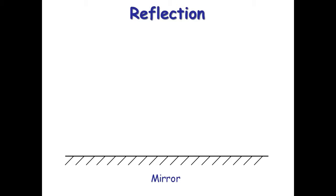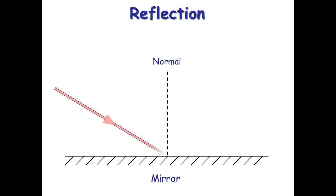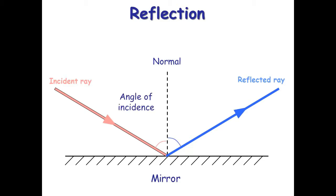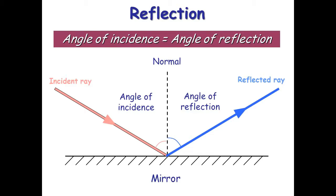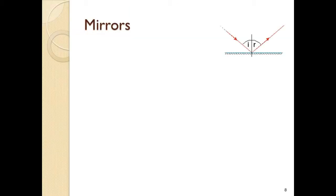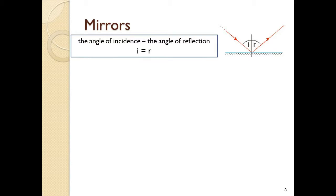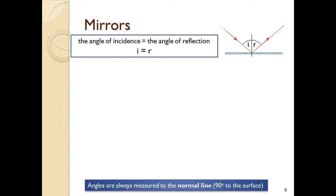A plane mirror — plane spelled P-L-A-N-E — means flat mirror. You always start by drawing a normal line, which is 90 degrees to any surface. The ray of light coming in is called the incident ray. The law of reflection says the incident ray and the reflected ray always bounce off at the same angle, so the angle of incidence equals the angle of reflection. Mirrors reflect light according to this law, and angles are always measured to the normal line, which is drawn at 90 degrees to the mirror surface.